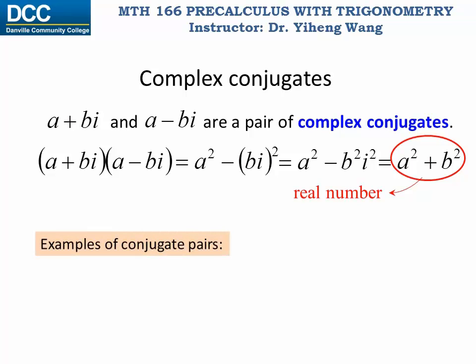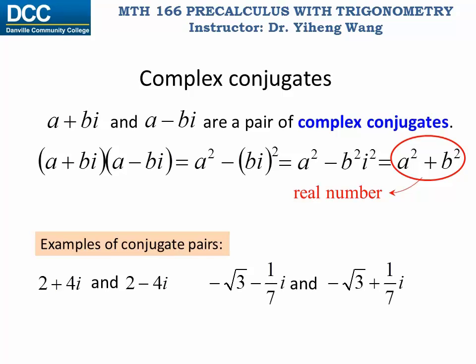Here are some examples of conjugate pairs. For complex number two plus four i, its conjugate is two minus four i. For negative square root of three minus one-seventh i, its conjugate is negative square root of three plus one-seventh i — the same real part, with the sign of the imaginary part flipped. For the pure imaginary number 16i, its conjugate is negative 16i. For the real number five, its conjugate is still five, because conjugate pairs share the same real part.